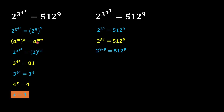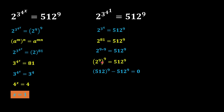Applying the power-of-power rule, since two powers are multiplying together, we can combine them. We write this as 2^9 with an overall power of 9, and the other part of the equation remains the same. So we get 2^9 overall raised to the power 9.